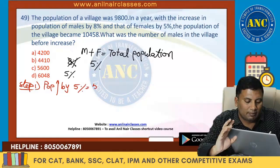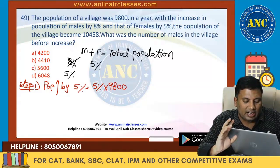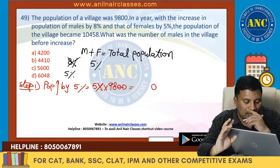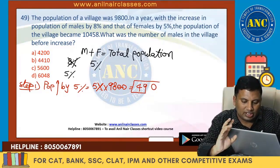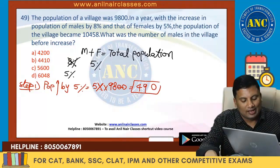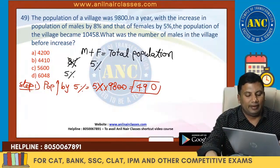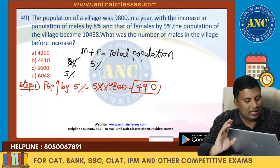Which is nothing but 5% of 9,800. By 100 — population increases by 490. Step number two: but actually in the question, the final value is 10,458 and initial value is 9,800.